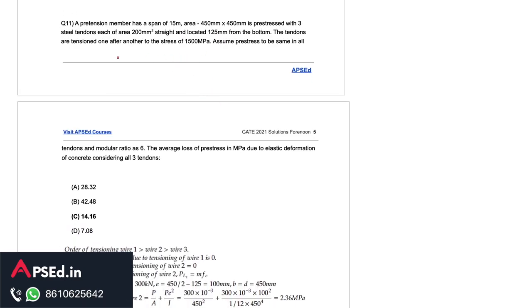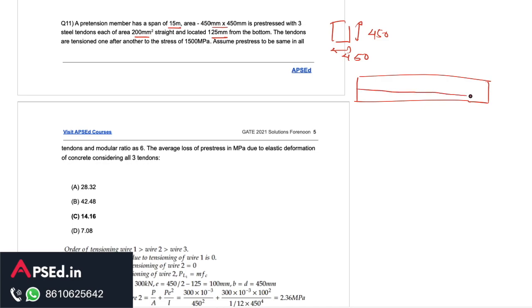Then this question related to the pre-stress. It says a pretension member has a span of 15 meter, cross sectional area is given as 450 by 450 mm, it has three steel tendons and area of these tendons is 200 mm square and these are straight and located at 125 mm from the bottom. On the length if we see we have something like this and at 125 mm from bottom we have these tendons. Eccentricity we know we calculate from the neutral axis so we will need to find that out. This total depth is 450 and from bottom the tendons are located at 125 mm so eccentricity will be 450 by 2 minus 125.